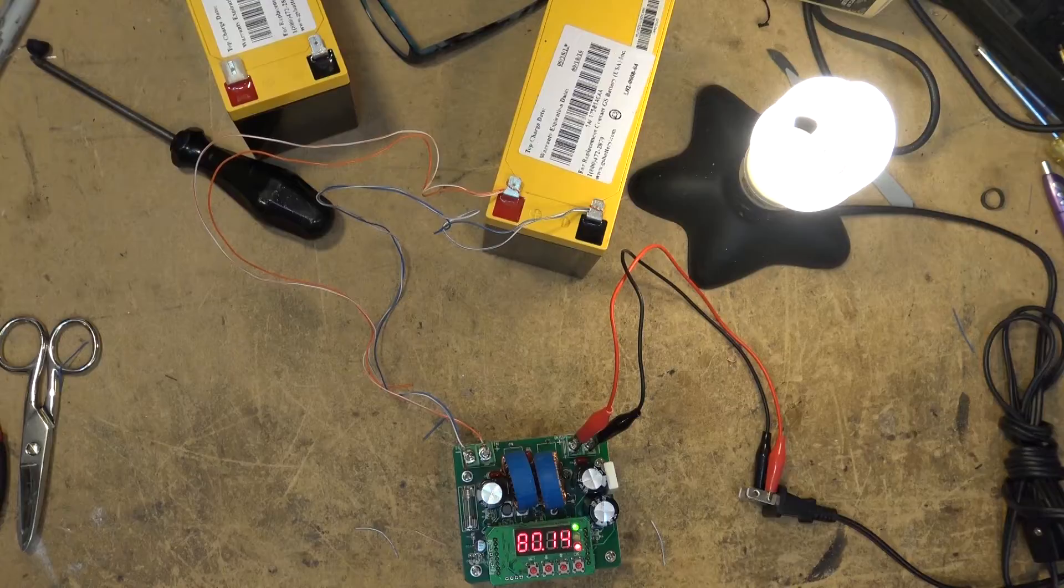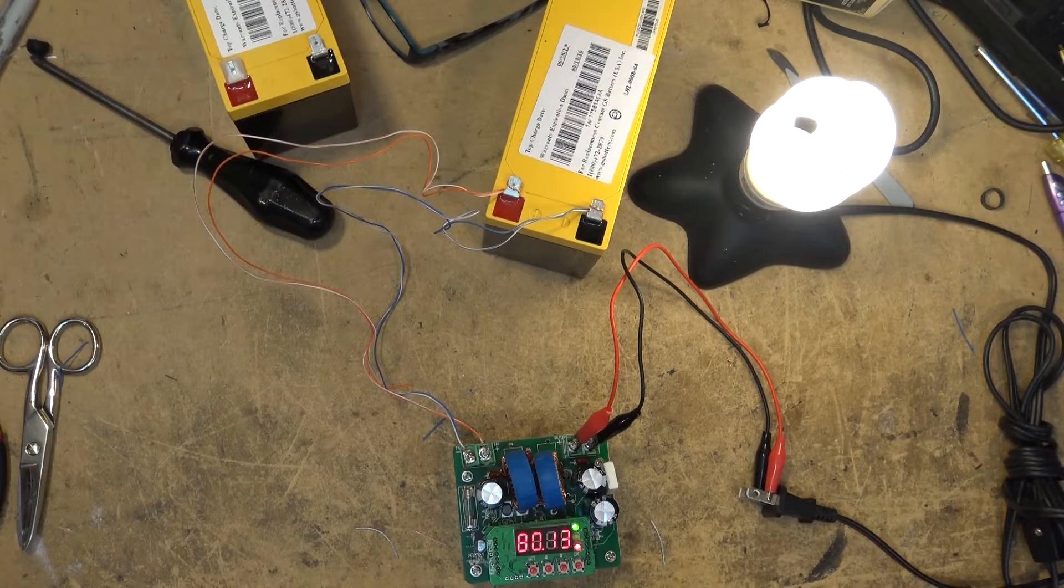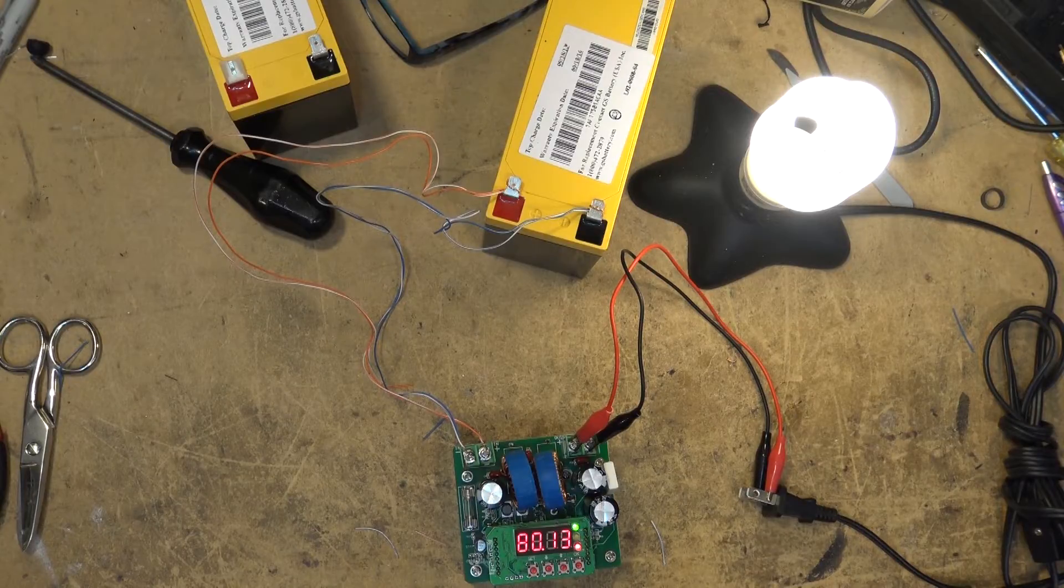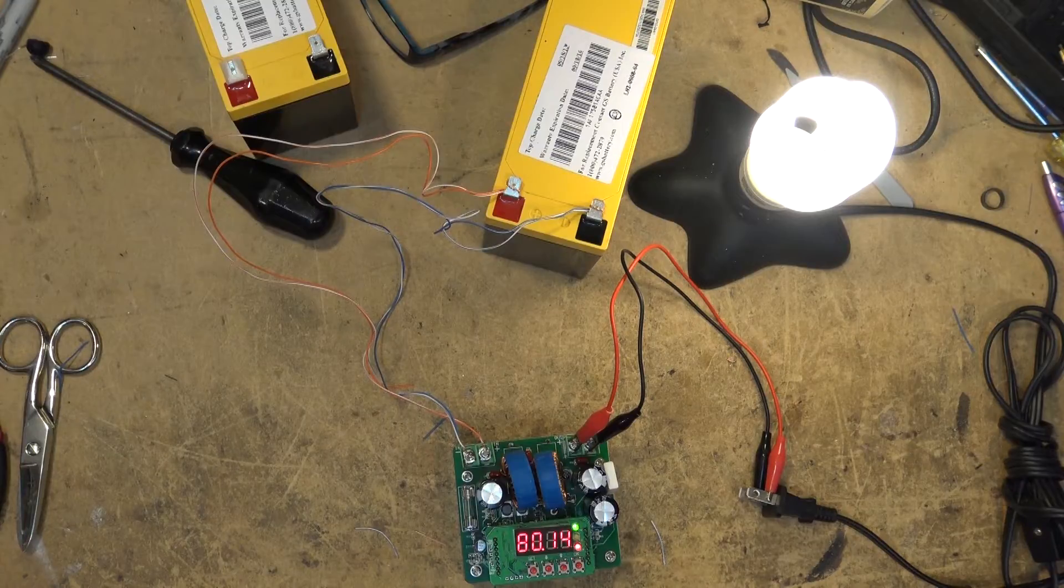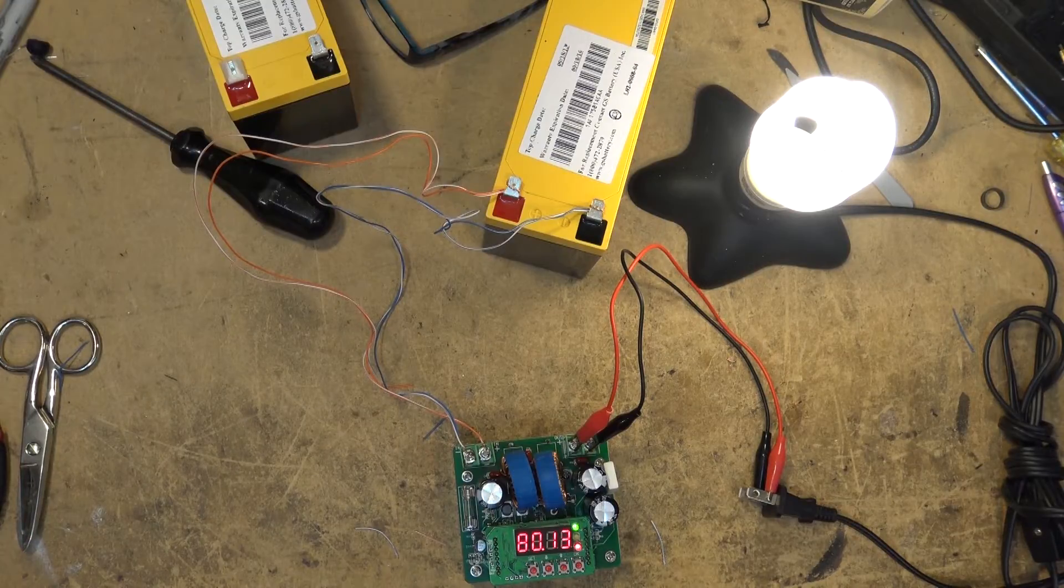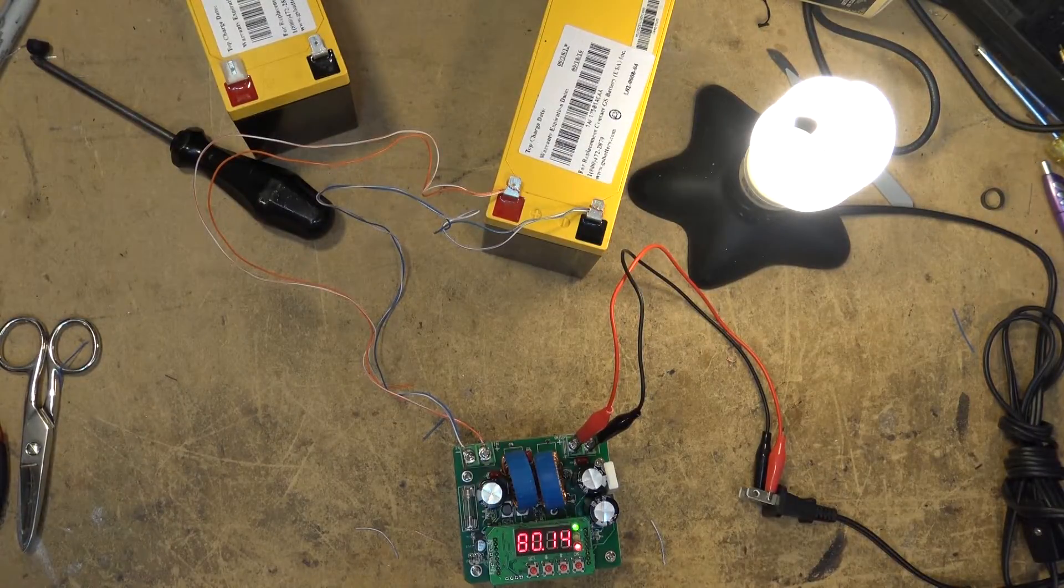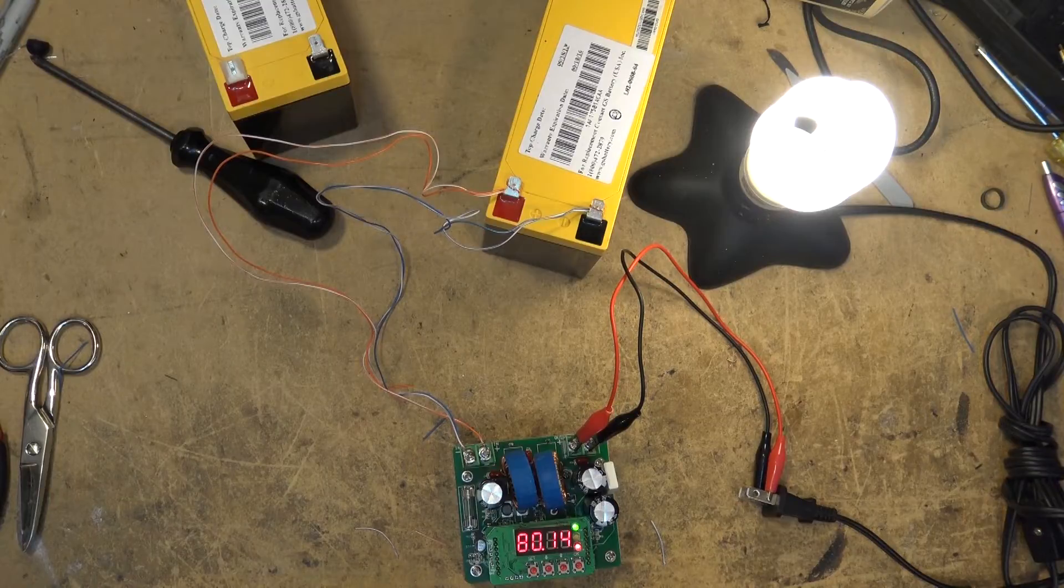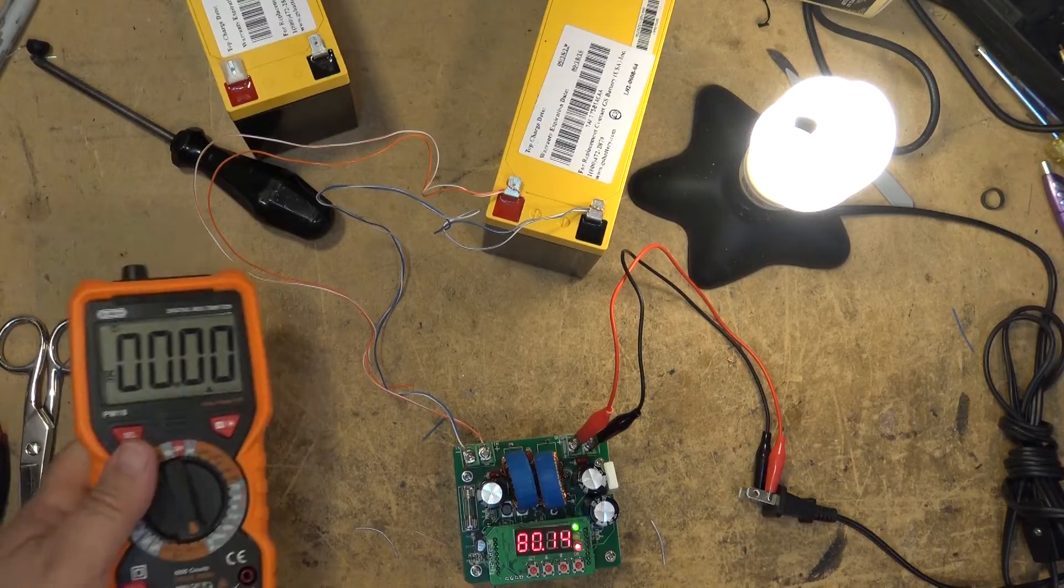One of these units will be quite useful in a motorhome or trailer where you could run 120 watt CFL or LED lamps off your 12 volt battery. It would be a lot more efficient than turning on your main inverter which is going to be rather power hungry.